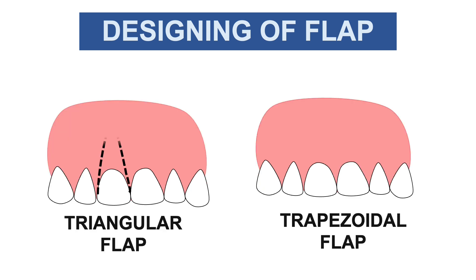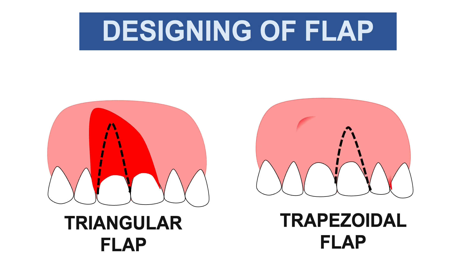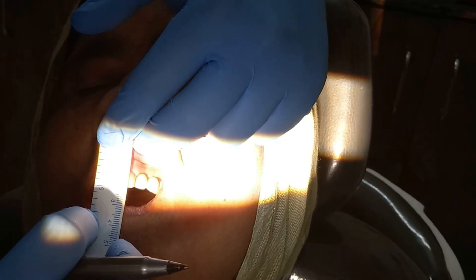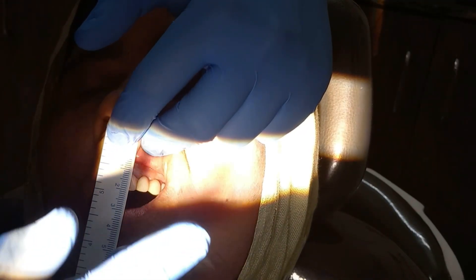The triangular flap is somewhat triangular in shape. Both the triangular and trapezoidal flaps are used when there is an extensive bony defect, especially towards the alveolar crest. The difference: in the triangular flap there is tension in the tissue, whereas the trapezoidal flap allows easy approximation of the flap to its original position without producing tissue tension.